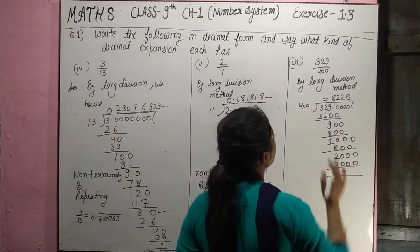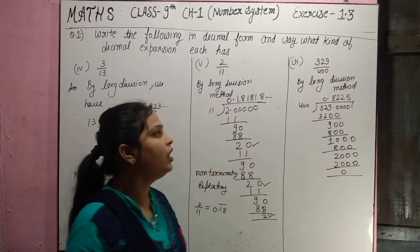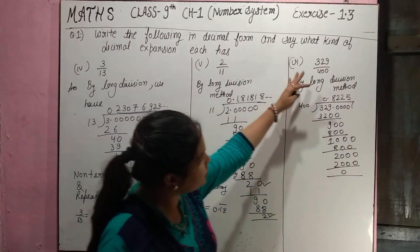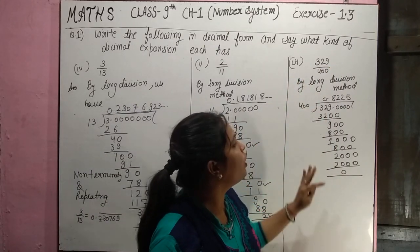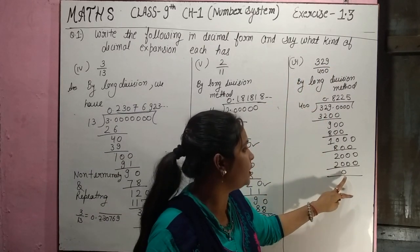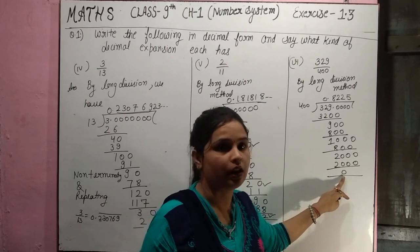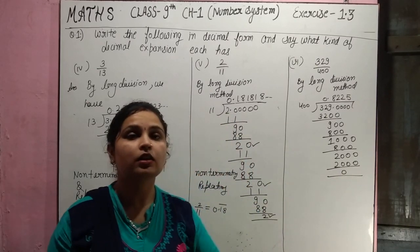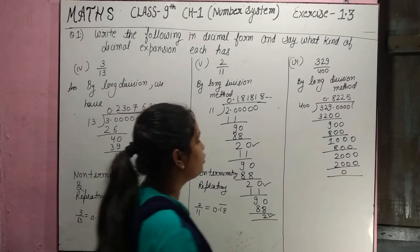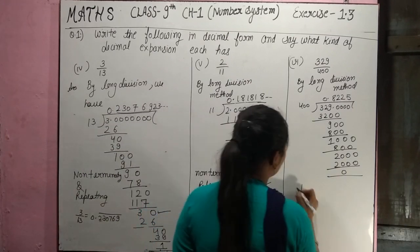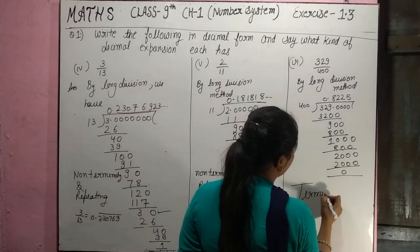Next is 329 by 400. When we divide this, the remainder eventually becomes 0, which means this is a terminating decimal.